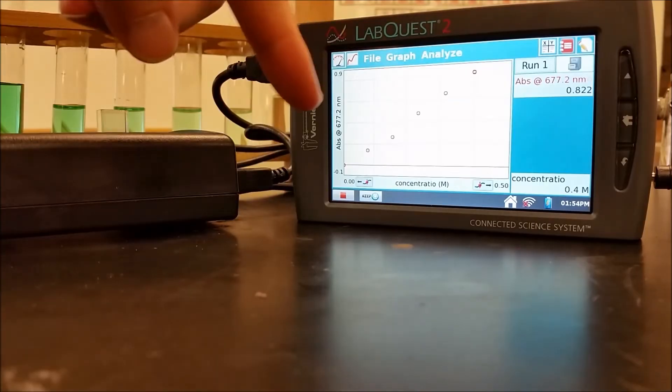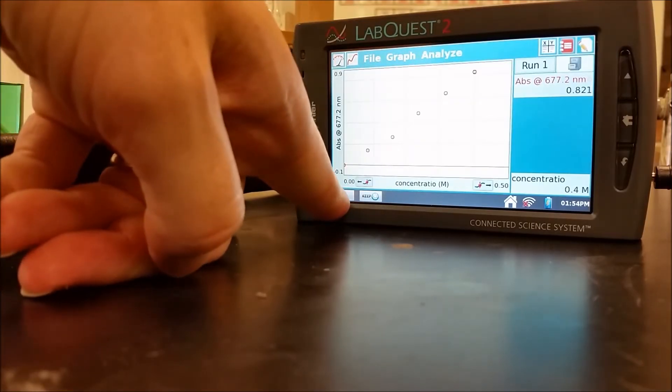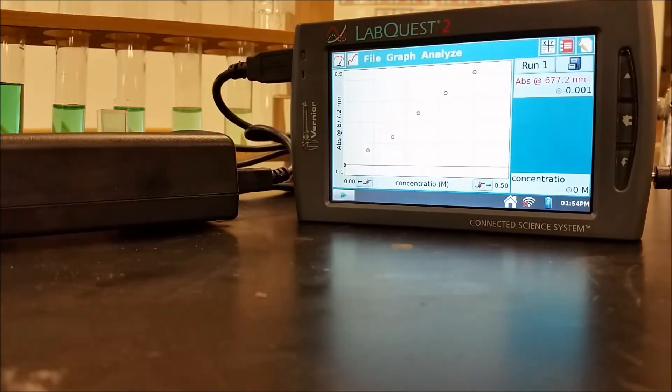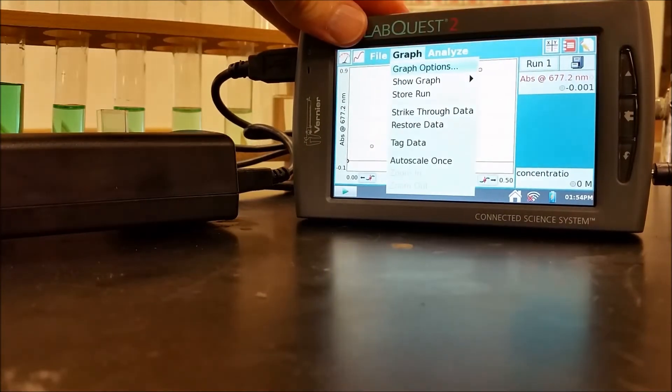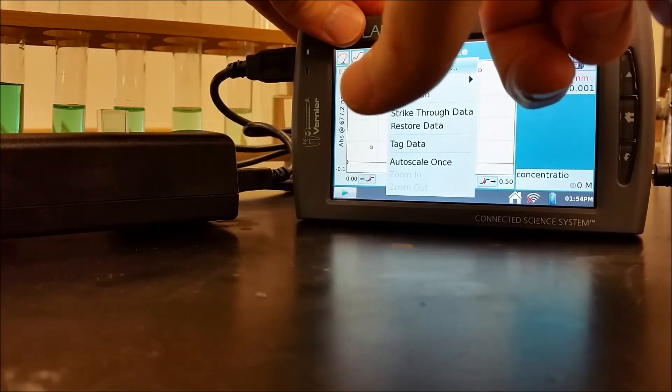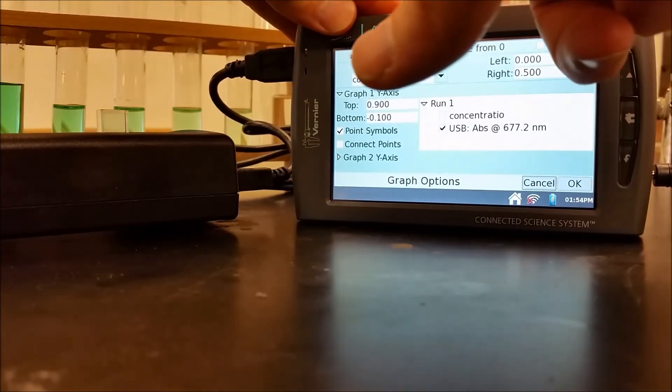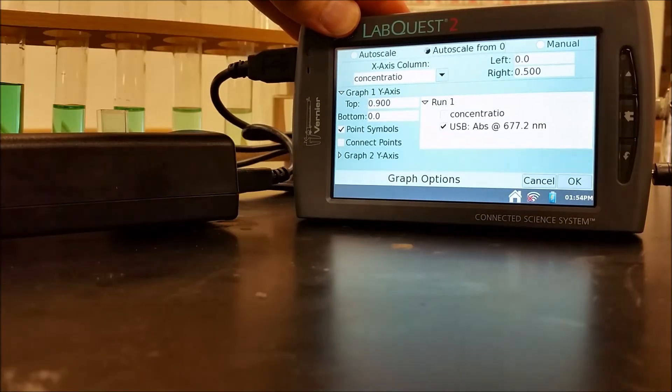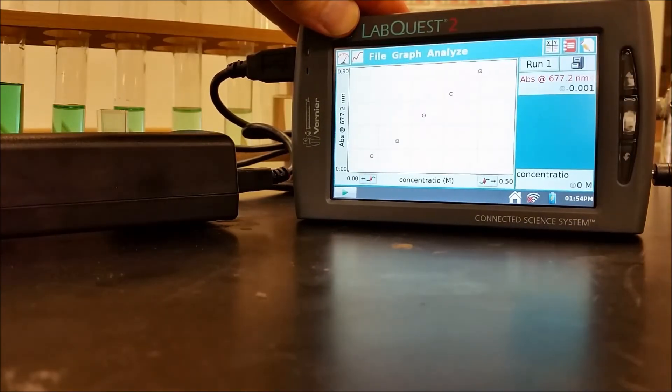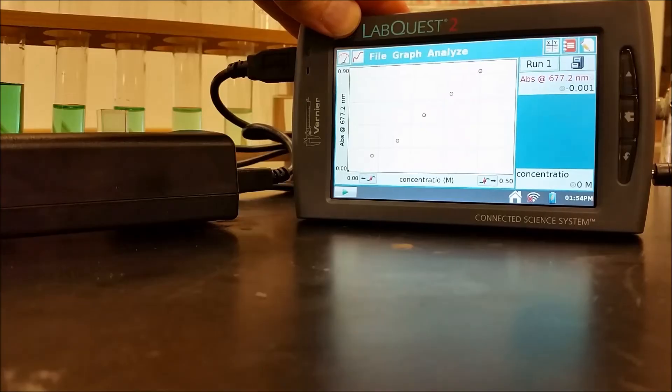So now you can see that we have this linear result. So what I'm going to do now is hit stop. And I'm going to show you how to analyze this. So for graph, you want to hit graph. And then under graph options, you want to hit auto scale from zero. That's going to put you through the zero, zero intercept origin. Then you want to go to analyze.